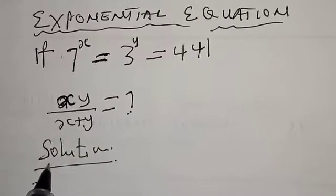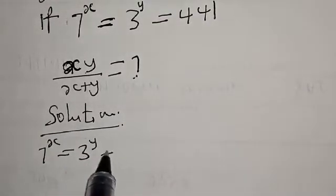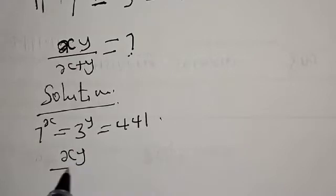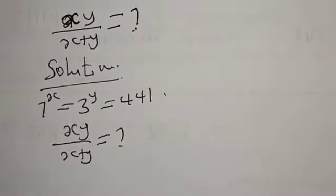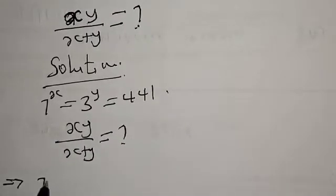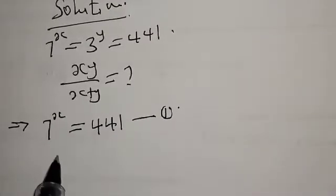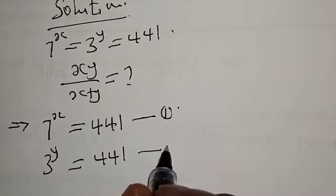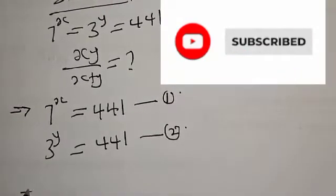We have 7 raised to power x equal to 3 raised to power y equal to 441, and we need to find x·y over x plus y. This implies that 7 raised to power x is equal to 441 — equation 1 — and 3 raised to power y is equal to 441 — equation 2.